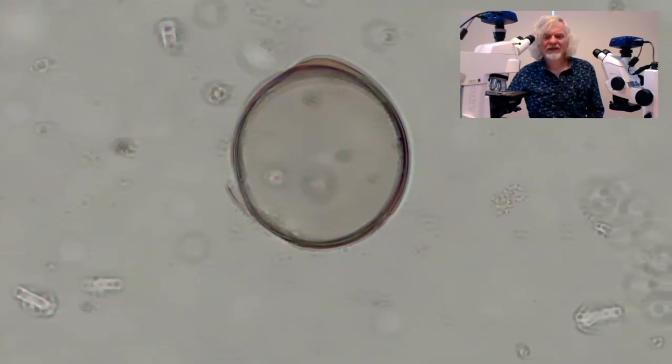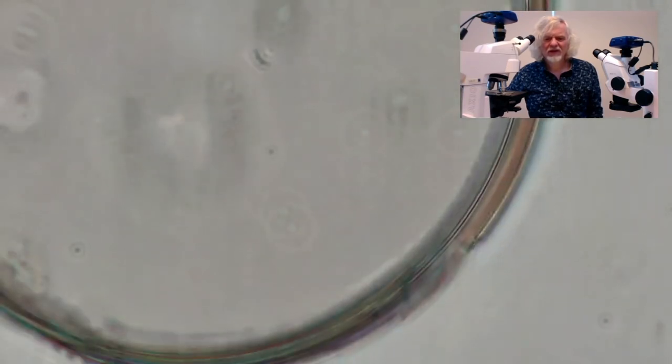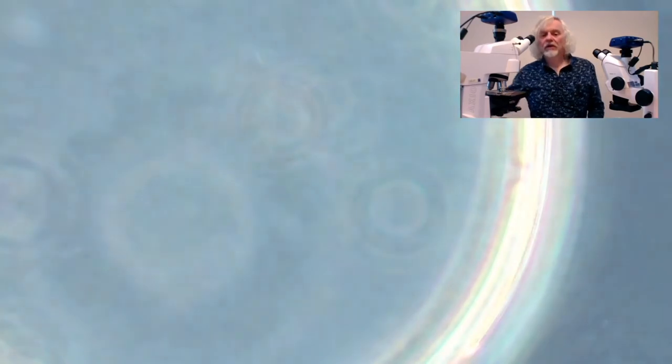And here is just a single Coscinodiscus half. It's split into two. And if I get my illumination just right, like that,